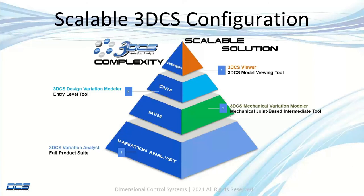Today we are going to talk about the 3DCS Viewer of the pyramid. If you've been following us, you know we are going down the road of a scalable solution. At the bottom of the pyramid is our flagship product which has all the capabilities — iteration moves, all kinds of measurements, user DLLs — basically you can model anything you want inside our variation analysis. To specialize, if you're mainly dealing with mechanical joints, we now have another package called MBM.